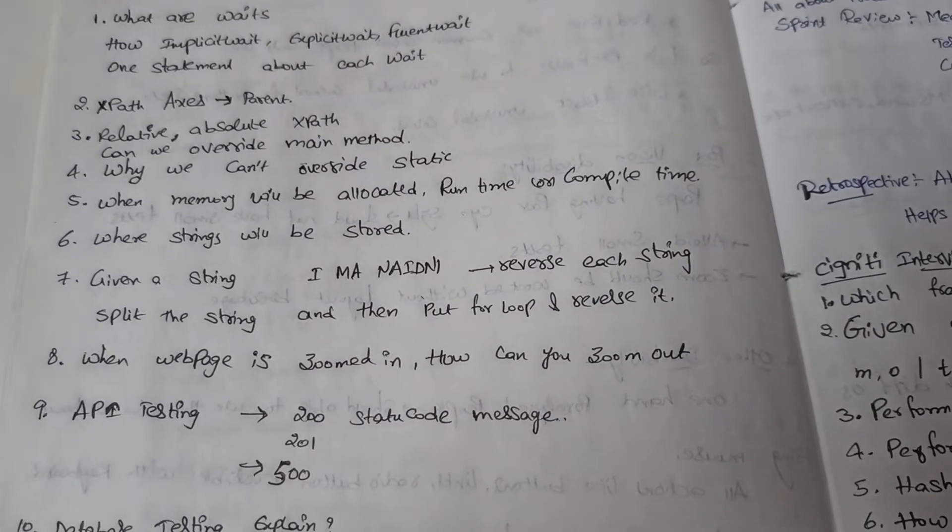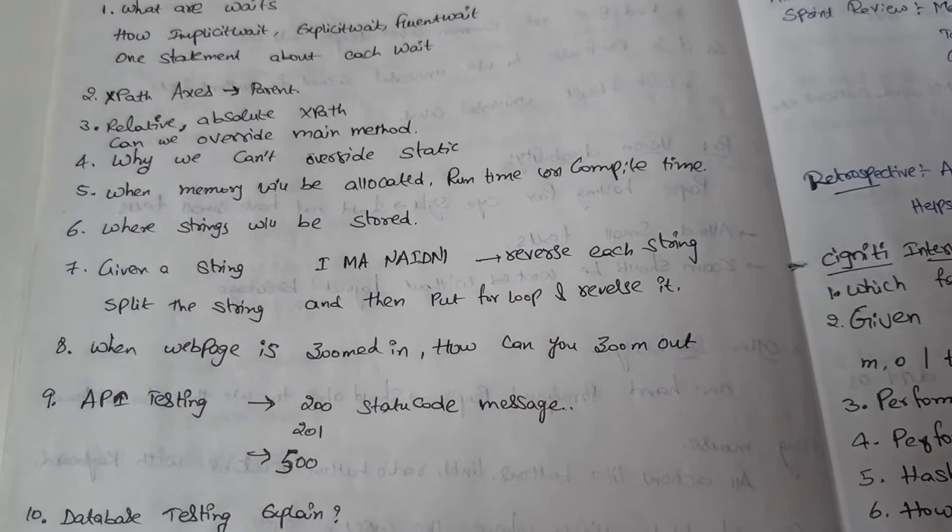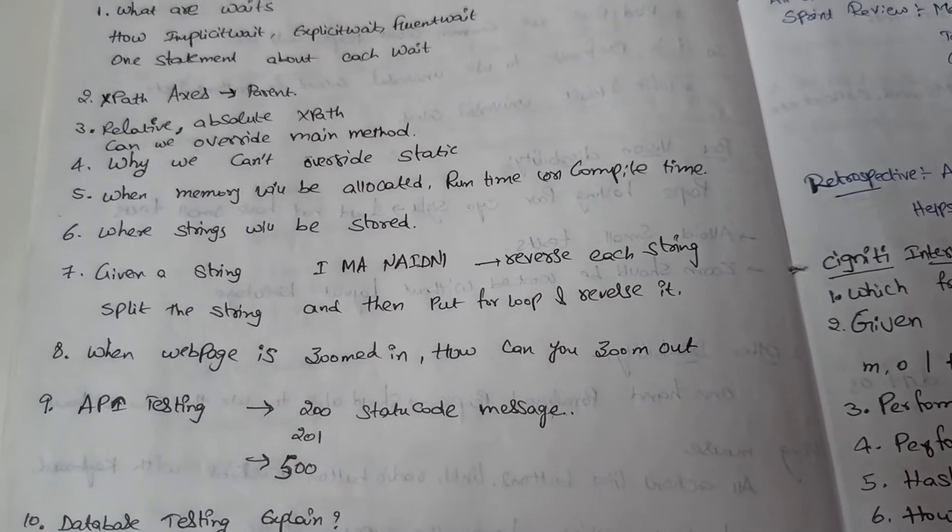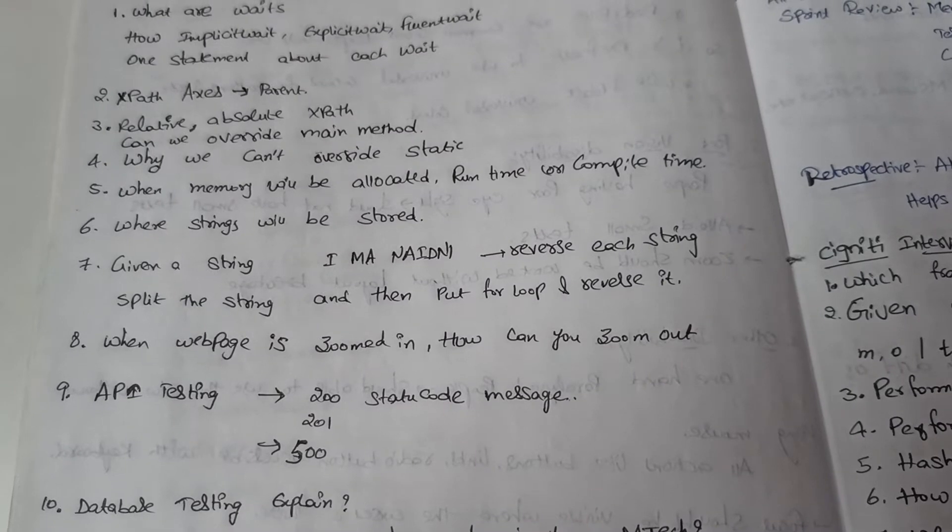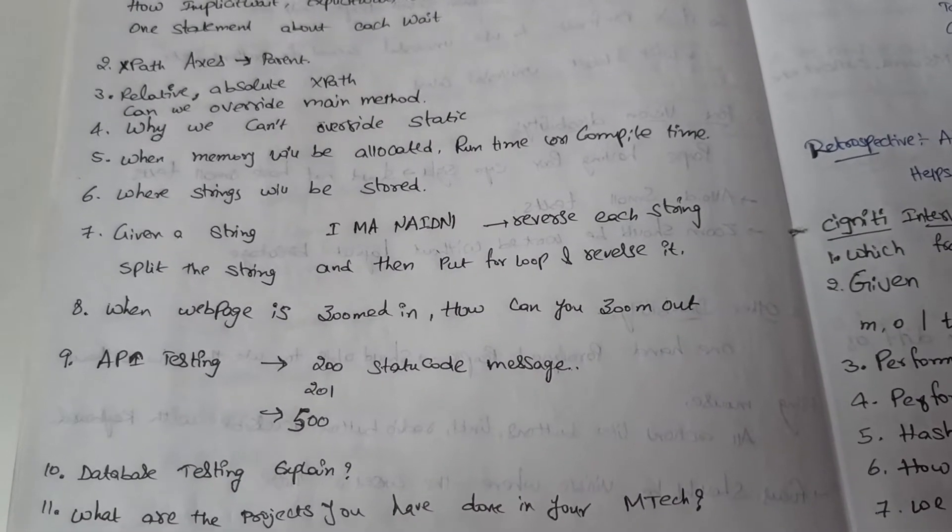Also, a Java question: can we override main method and why we can't override static method. When will memory be allocated - when memory will be allocated for static method, runtime or compile time? This is the fifth question.